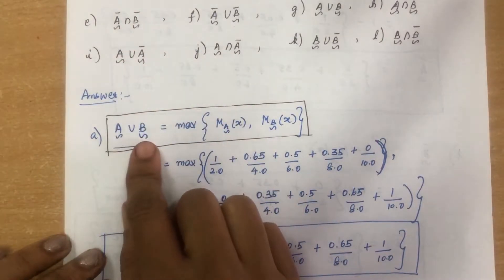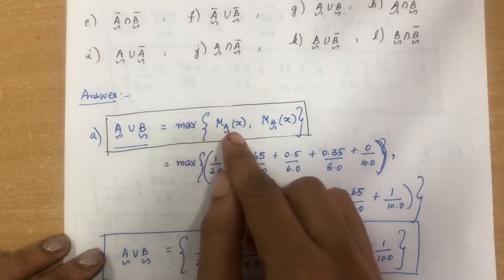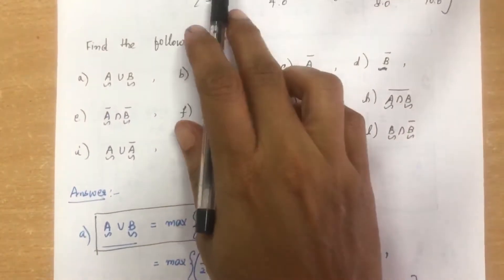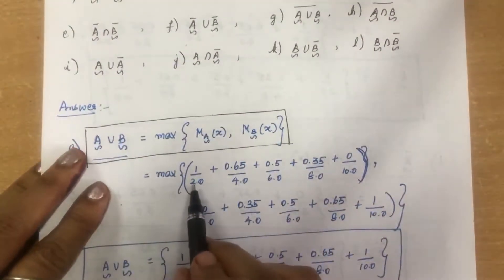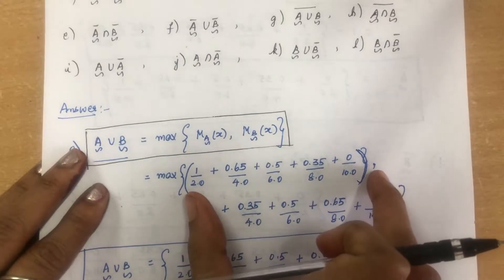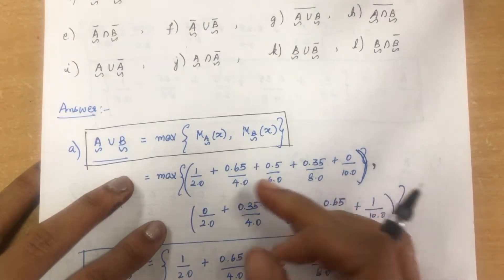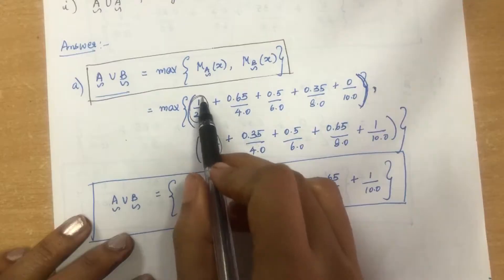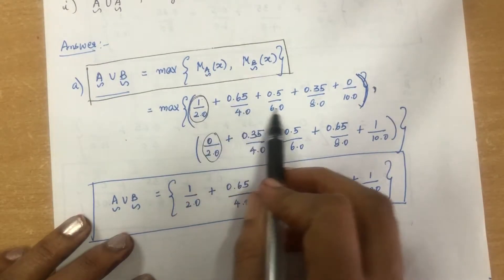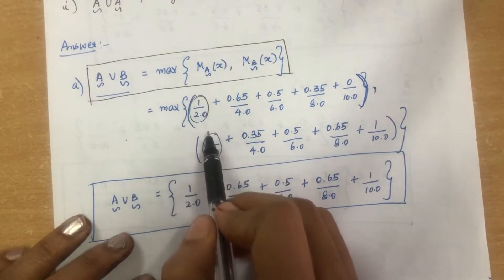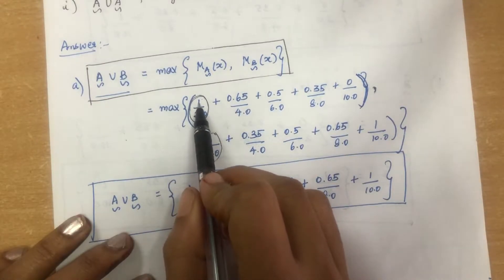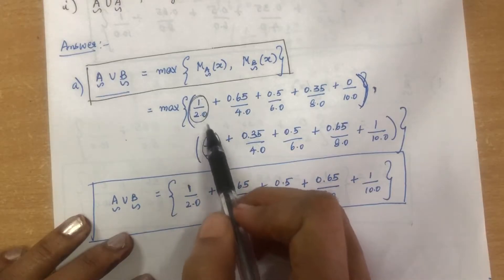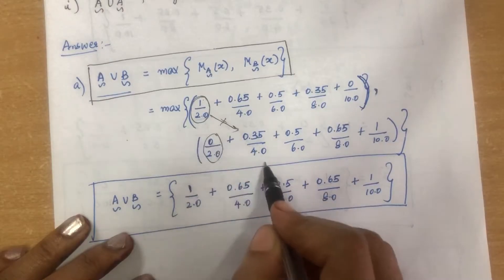For A union B, the formula is: maximum of (membership value of A, membership value of B). We compare only elements with the same denominator. For 2.0: max(1, 0) = 1, so 1/2.0. We cannot compare elements with different denominators like 2.0 and 4.0. For 4.0: max(0.65, 0.35) = 0.65, so 0.65/4.0.